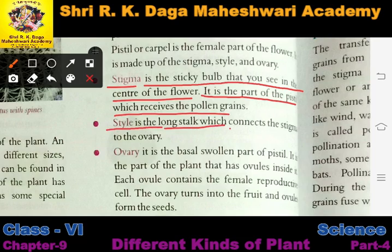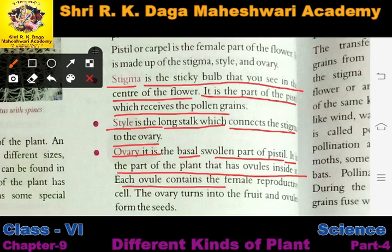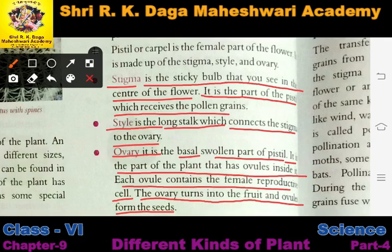Style is a long stalk which connects the stigma to the ovary. Ovary is the basal swollen part of the pistil — a slightly thick part at the base. It is the part of the plant that has ovules inside it. Each ovule contains the female reproductive cell. The ovary turns into fruit and ovules form the seeds.